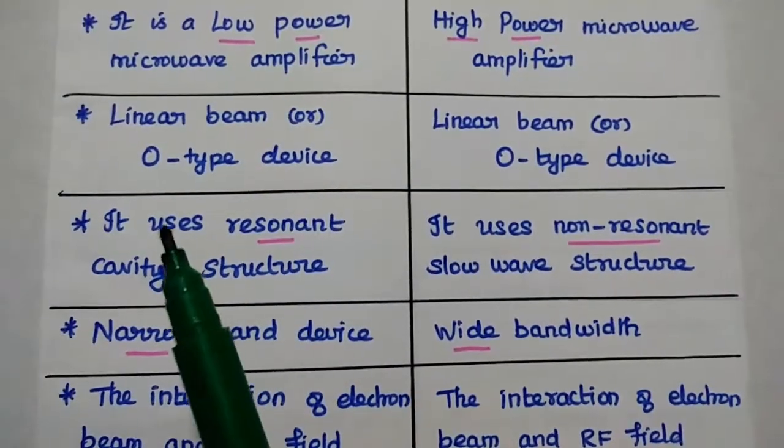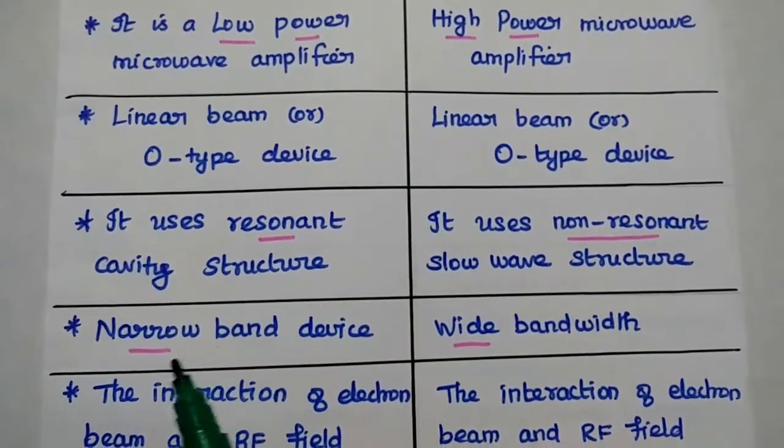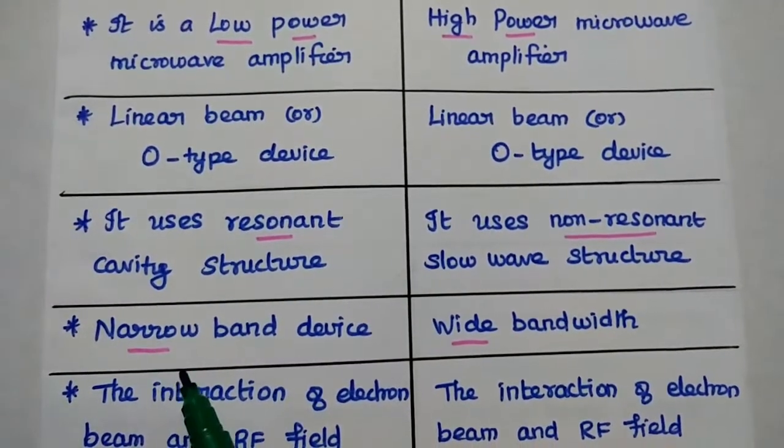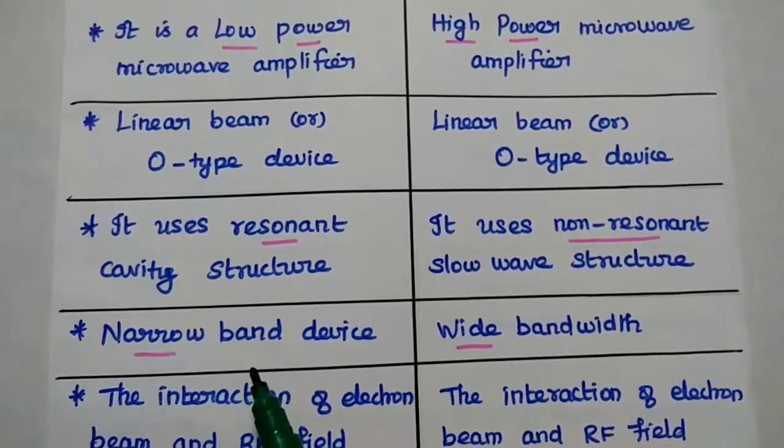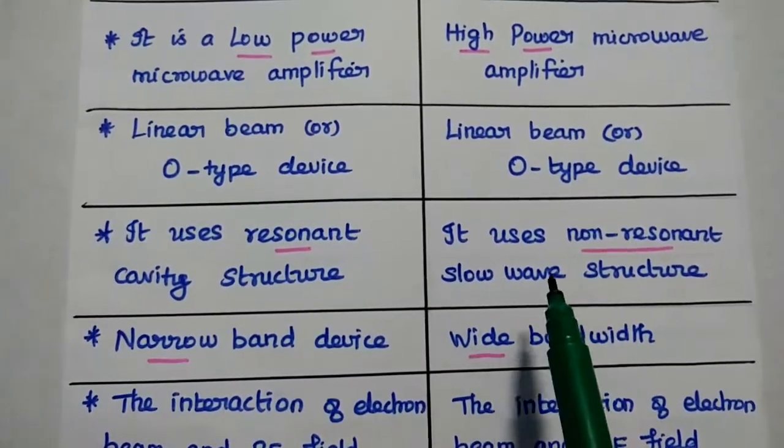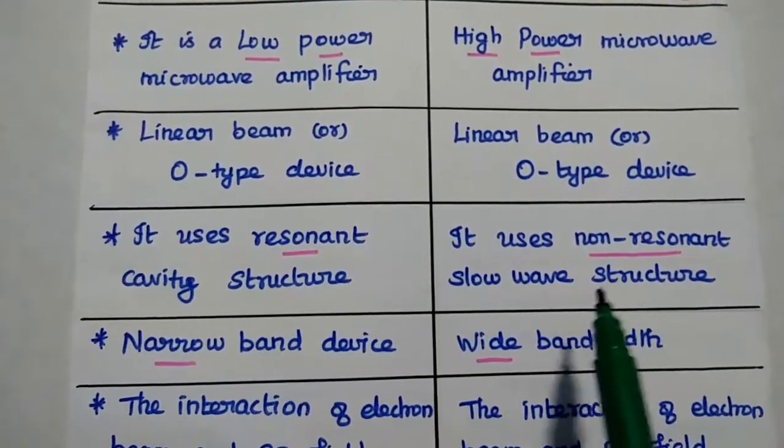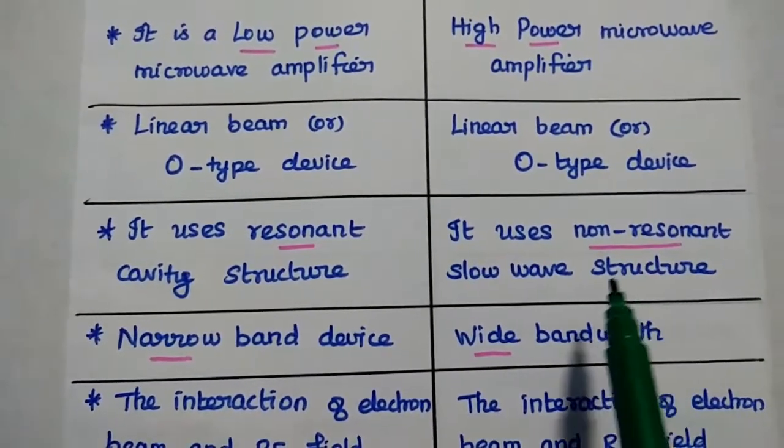Two cavity klystron amplifier uses resonant cavity structure. It has two cavities. One is buncher cavity, the next one is catcher cavity. Here this TWTA uses the non-resonant slow wave structure. There is no cavities used in this TWTA.